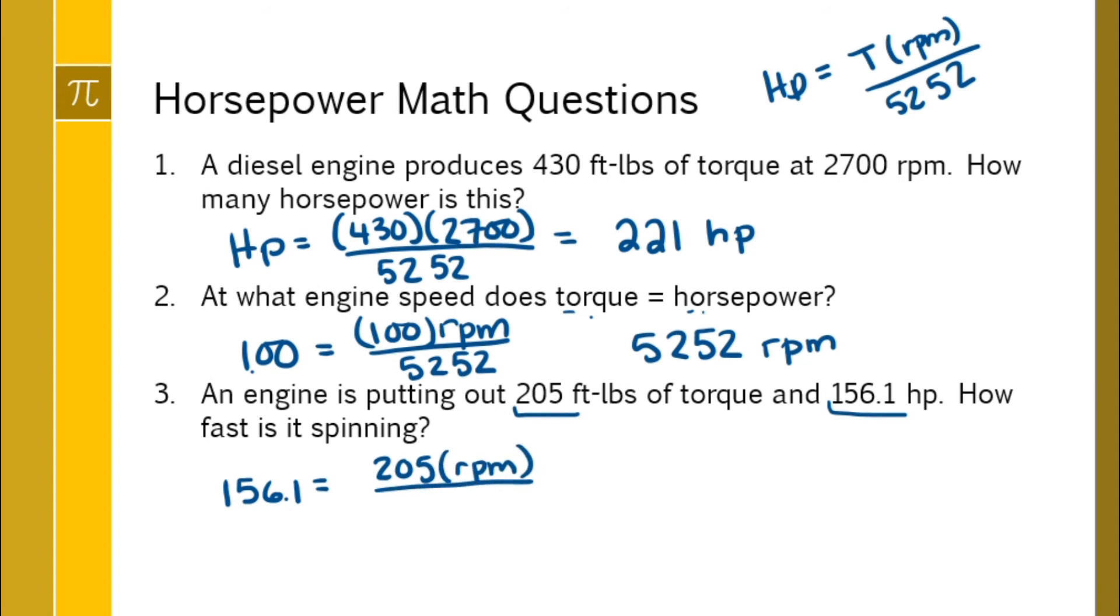Horsepower is equal to torque times the RPMs divided by 5252. You can do that math. You can do this division to make one number if that's what you're comfortable with. We're going to get 156.1 is equal to 0.039 times the RPM.